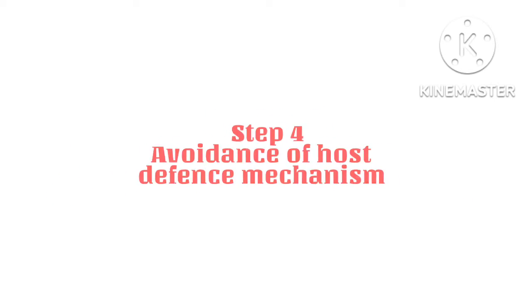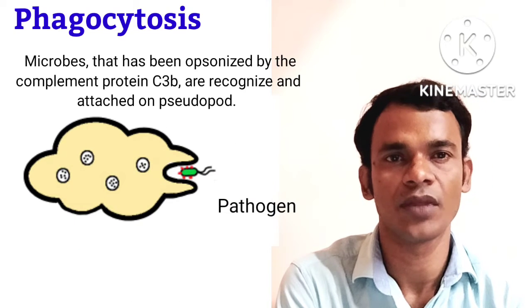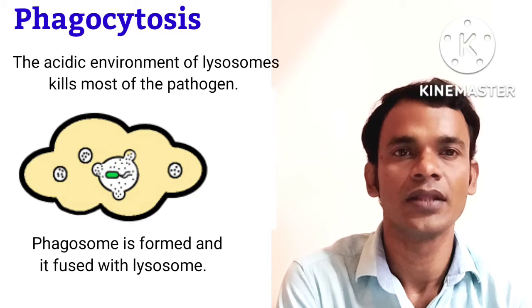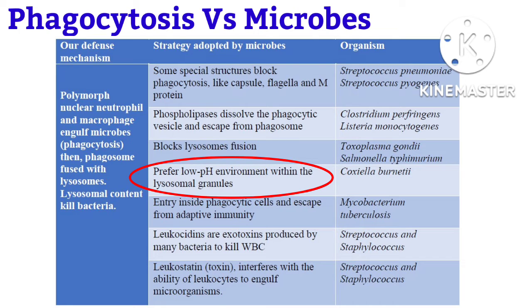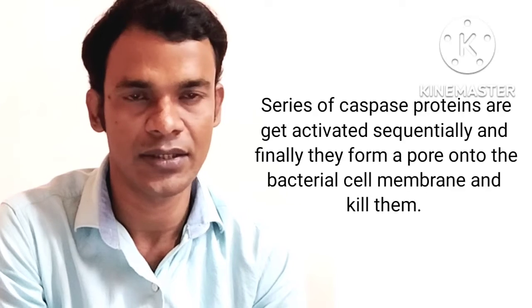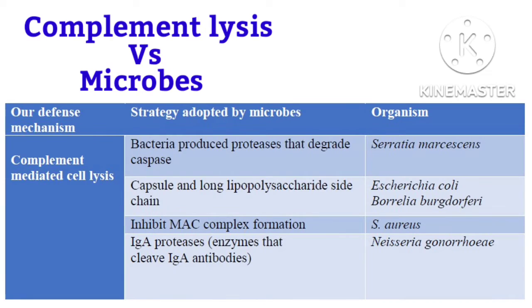When bacteria manage to cross the first line of defense, the second line — the immune system — gets activated. The most important mechanisms are phagocytosis, complement-mediated bacterial lysis, and adaptive immunity. Neutrophils and macrophages engulf microbes; after phagocytosis, the phagosome fuses with the lysosome. The acidic environment of the lysosome kills most pathogens. However, some bacteria escape because of a capsule or flagella; some can stop the fusion between phagosome and lysosome; some withstand the harsh lysosomal environment; and some can break the phospholipid membrane of the phagosome and escape into the cytosol. Another line of protection is complement-mediated cell lysis, where a series of proteins are activated sequentially to form a pore on the bacterial cell and kill it. But some pathogens can degrade complement proteins or prevent the initiation of the complement pathway.